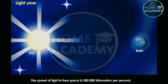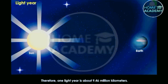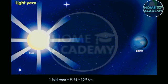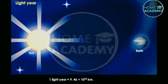The speed of light in free space is 3 lakh kilometers per second. Therefore, one light year is about 9.46 million kilometers. One light year equals 9.46 multiplied by 10 raised to 12 kilometers.